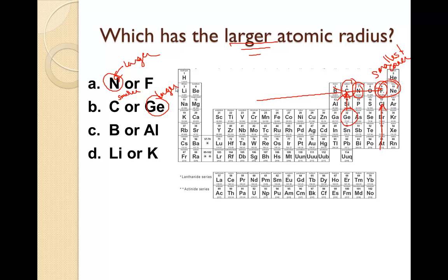Boron or aluminum, same ordeal. Boron is closer to the top. So boron is going to be smaller, aluminum is going to be larger.